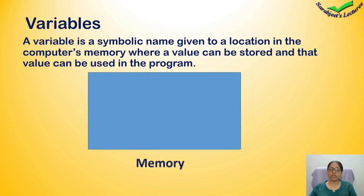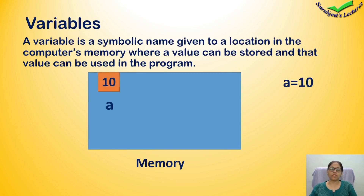Imagine that this is a memory area. Assume that we have declared a variable A is equal to 10. We will declare a box in memory for it. Similarly, if you have declared another variable B is equal to 20, then the same area will be occupied for B.